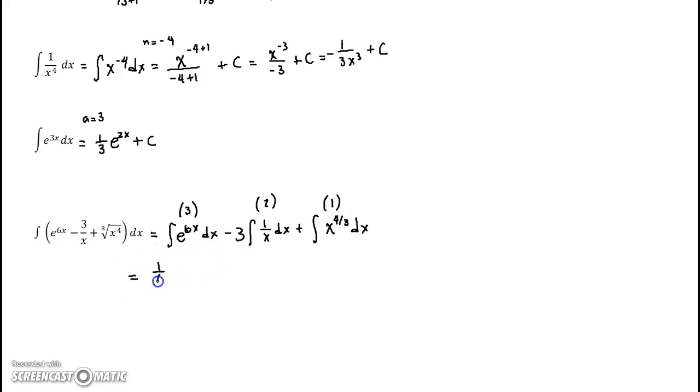And I get 1 over 6, e to the 6x, minus 3 natural log of the absolute value of x, plus, and then I have here x to the 4 thirds plus 1, so x to the 4 thirds plus 1, plus 1, all this is an exponent divided by 4 thirds plus 1, plus a constant C.